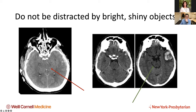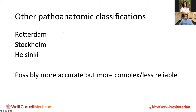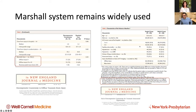There are other ways besides the Marshall classification that are potentially more accurate, but they're also more complicated and not as widely used. The Marshall classification is commonly used — you can see it in all the big NEJM trials of TBI. It's a good idea to get used to it and understand what it represents.